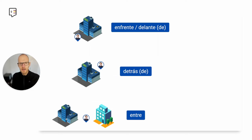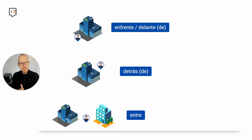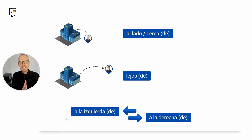Let's look at vocabulary for locating places more precisely. Something can be en frente or delante de — in front of. Something can be detrás de — behind. Or entre — in between — for example, entre la tienda de ropa y la cafetería. More ways to locate places: al lado — next to — or cerca de — near. The opposite of cerca, which means close, is lejos — far away.